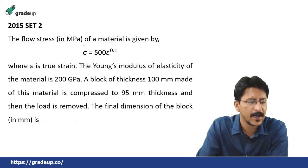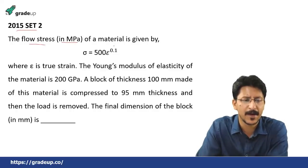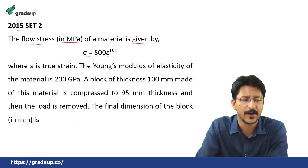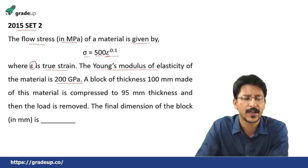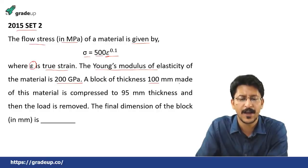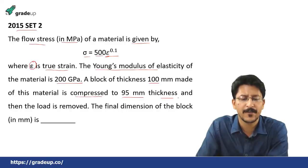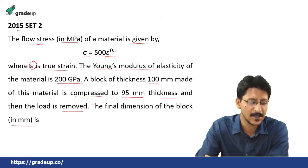GATE 2015, Set 2: The flow stress in megapascal of a material is given by sigma equal to 500 epsilon to the power 0.1, where epsilon is the true strain. The Young's modulus of elasticity is 200 gigapascal. A block of thickness 100 mm is compressed to 95 mm and then the load is removed. The final dimension of the block in mm is asked.